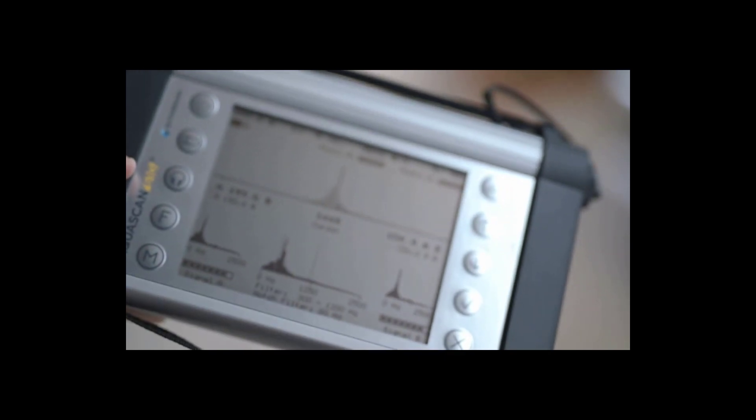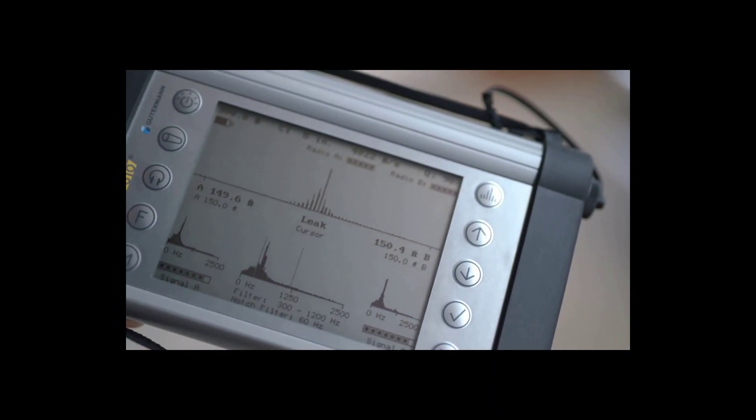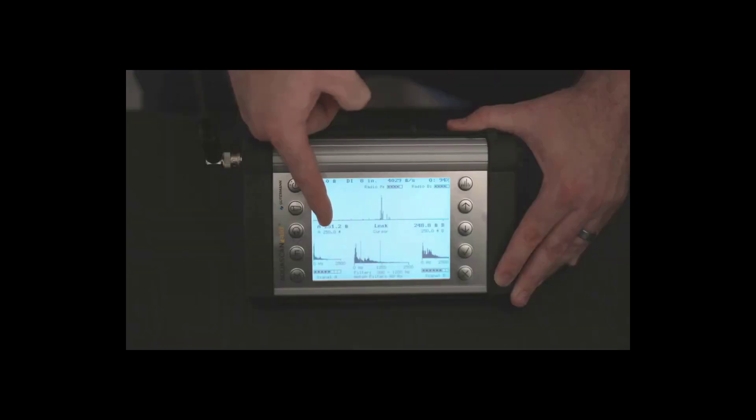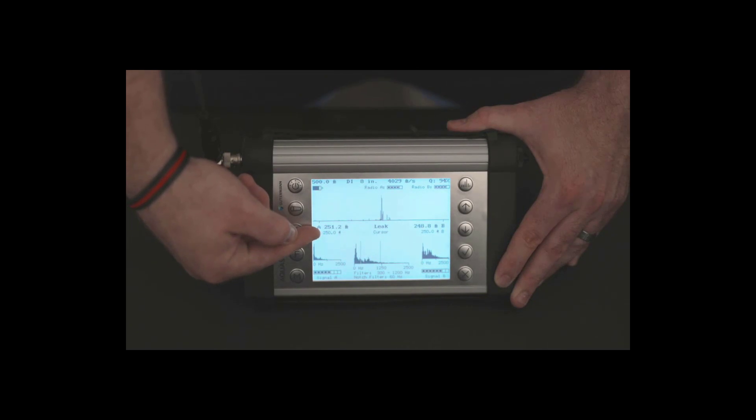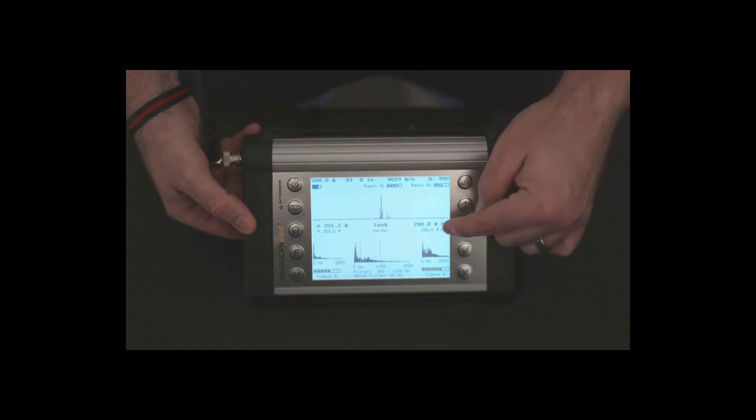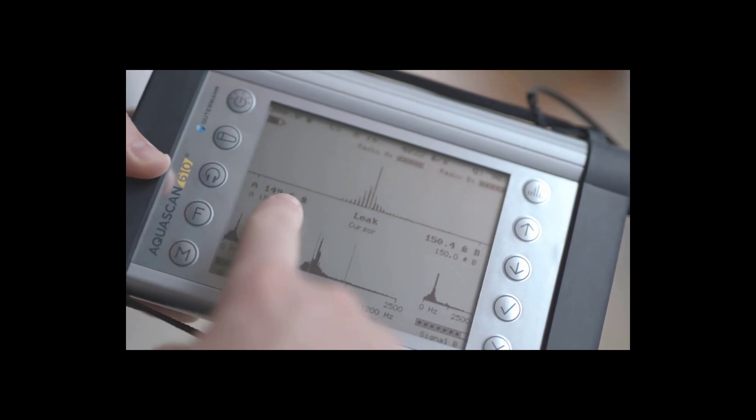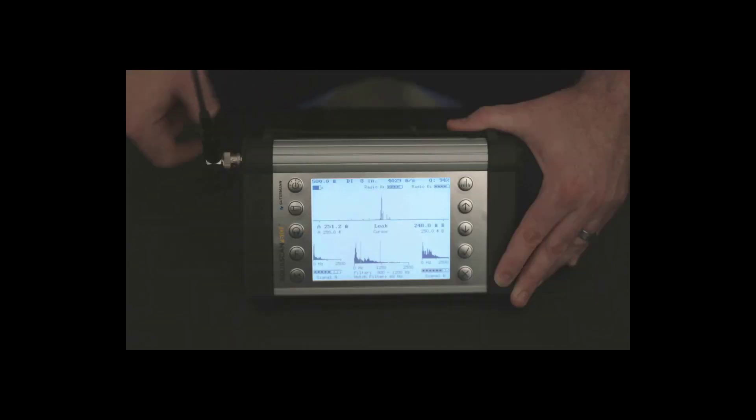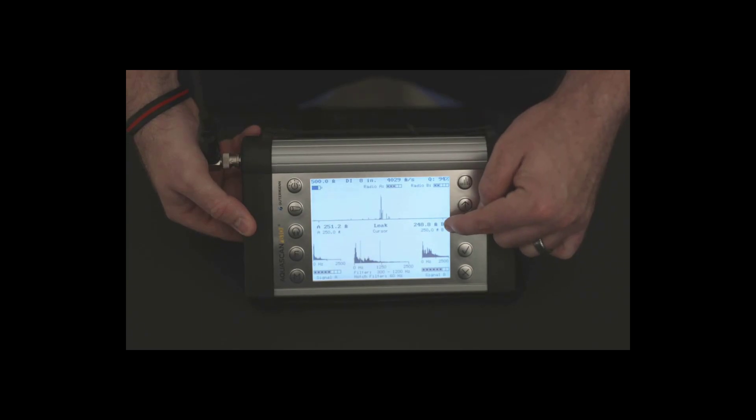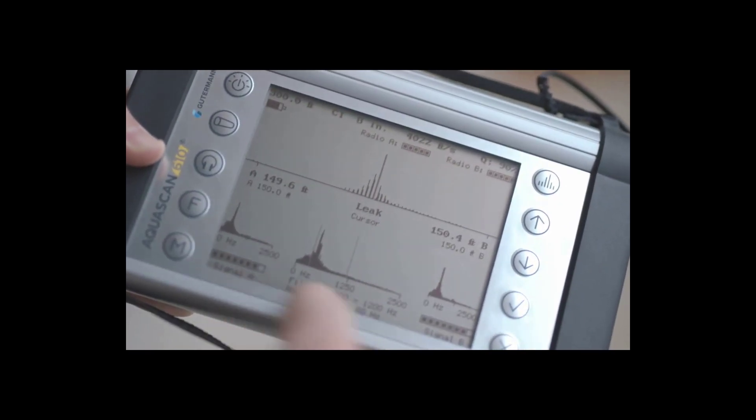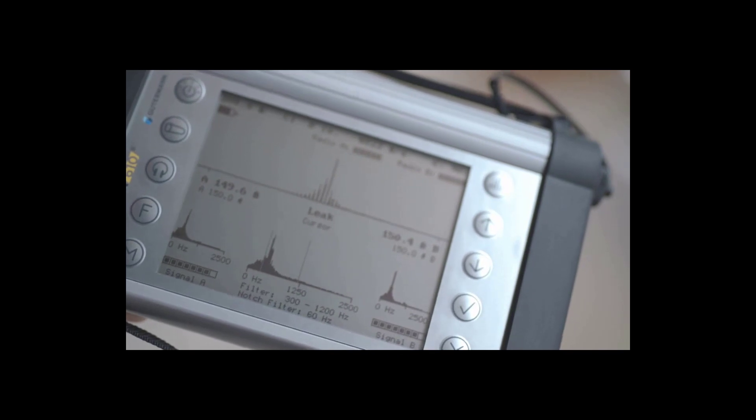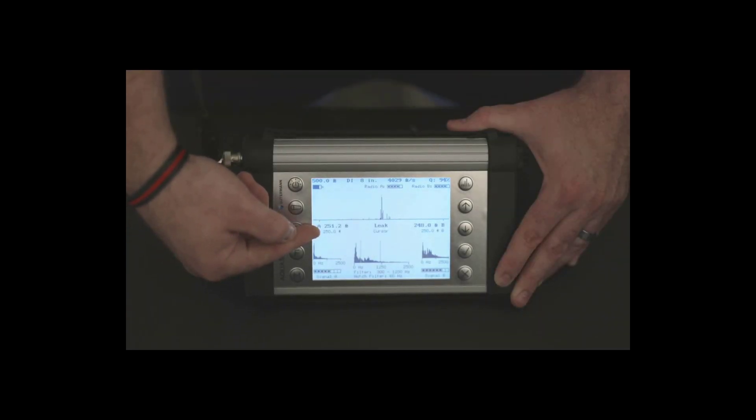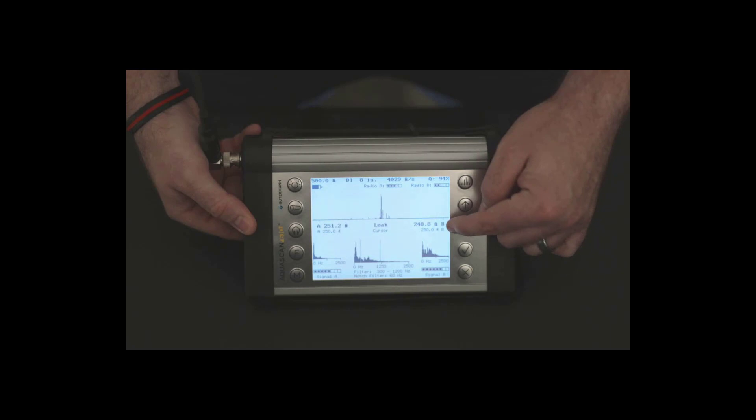The main graph also provides valuable information to the operator about the accuracy and potential for a leak. A leak will provide a clear peak on the graph. The processor's quality percentage number will rise in relation to the presence of a well-defined peak. The presence of the leak from sensor A will be indicated by the bold number under the graph's A on the left. The distance of the leak from sensor B will be indicated by the bold number under graph's B on the right side. The smaller number under A and B indicates the position of the cursor on the graph.